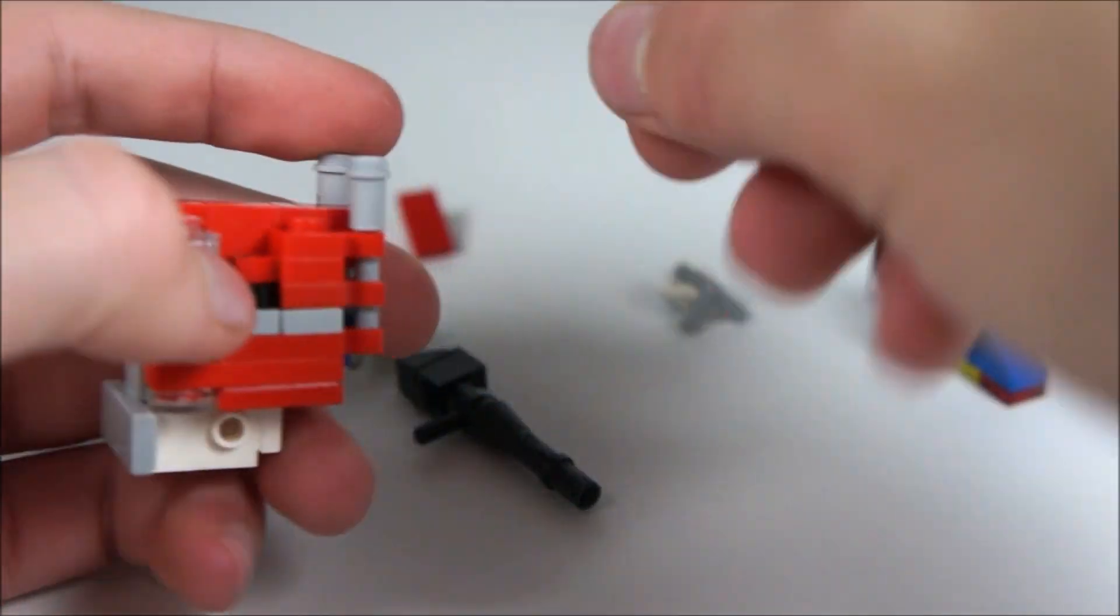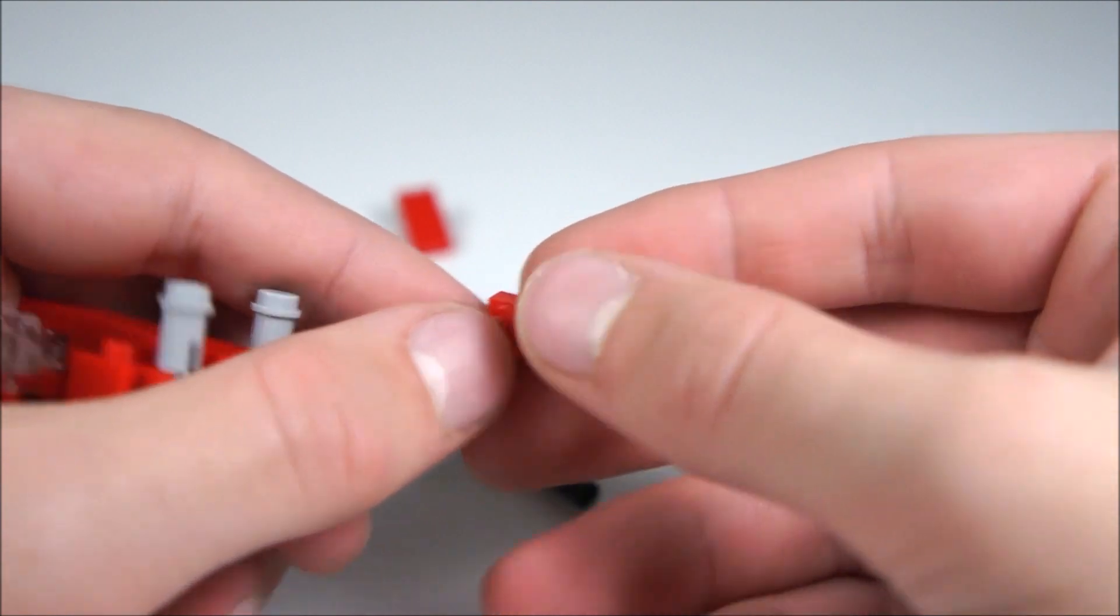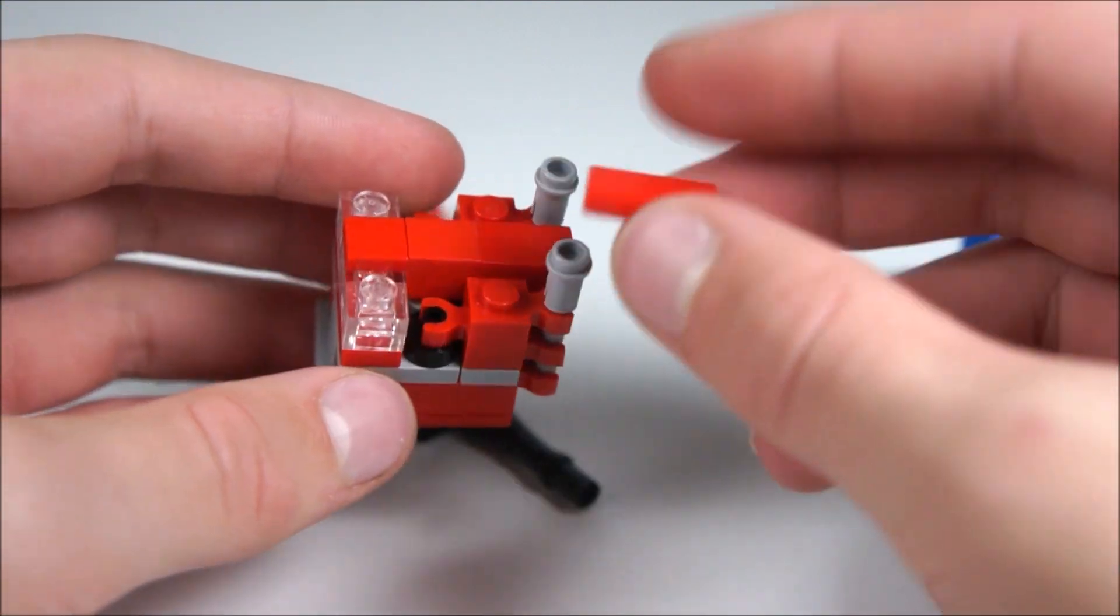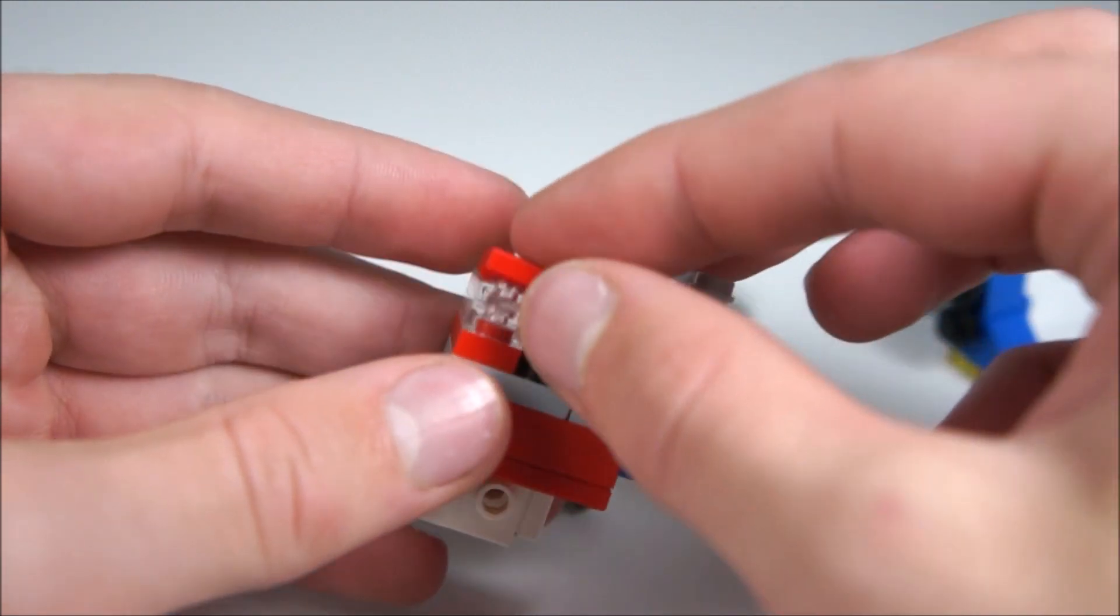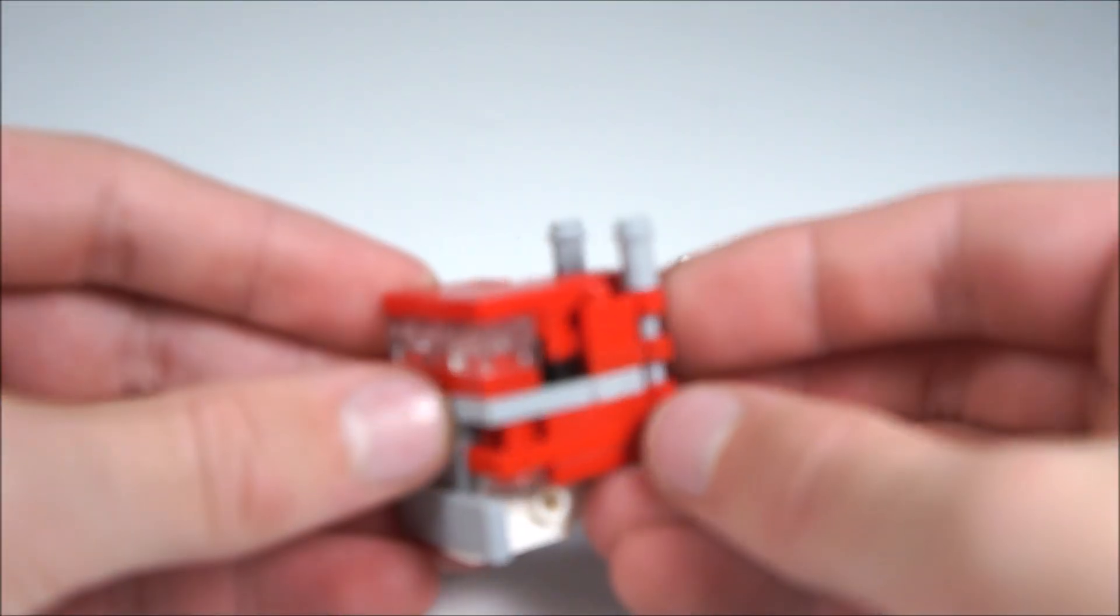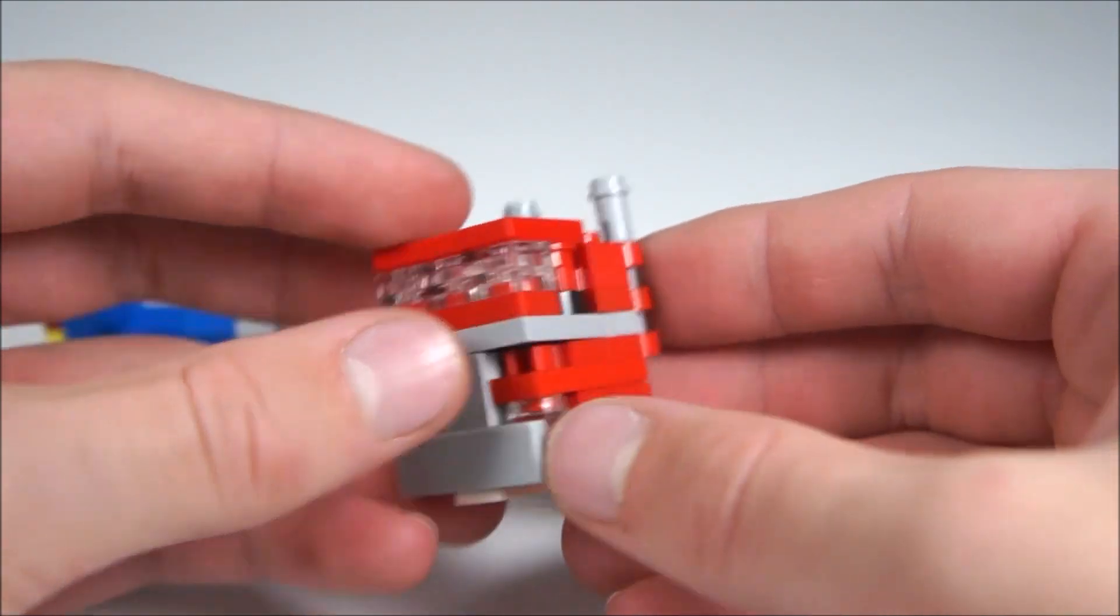And now for the top of the vehicle. Take a one by two with a stud on the bottom. It has to be a stud, a round one. It can't be a square one because then the arm won't transform. So that goes right there. Just get two of those. Put those there. And you're good.